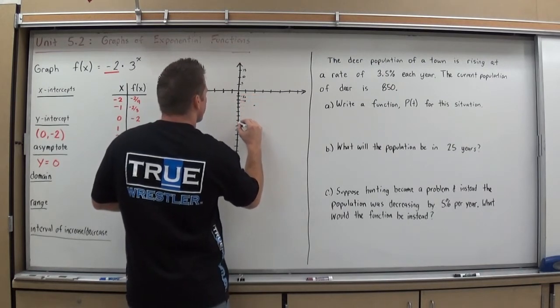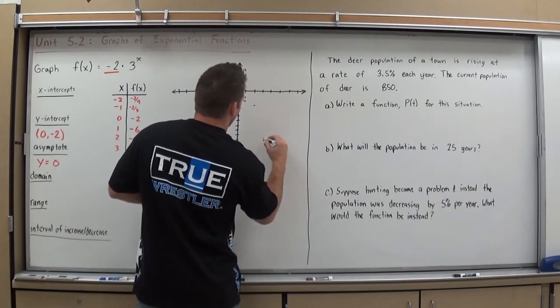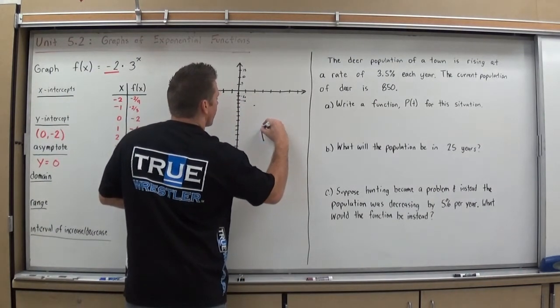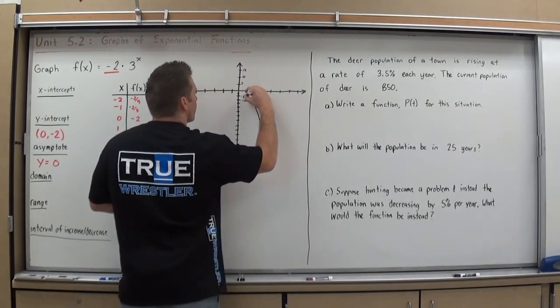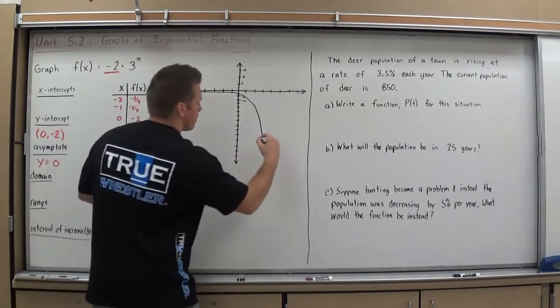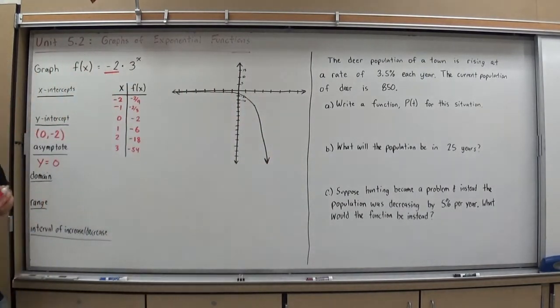And then, 3, 54. So, I'm starting to get the shape of my graph. Now, because it's getting out of control rather quickly here, I'm going to go ahead and start forming my curve. And that would be my exponential function. It looks like a ramping graph. So, I feel pretty comfortable with it.